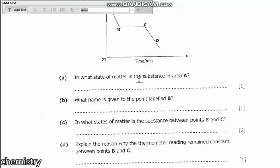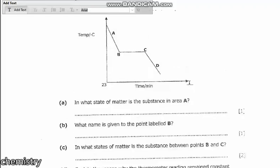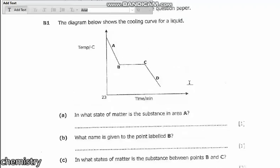In what state of matter is the substance in area A? When you look at area A, when you have a straight line like this, that means there's only one state of matter that exists there. And since we are coming from liquid going to solid, that is the liquid state.